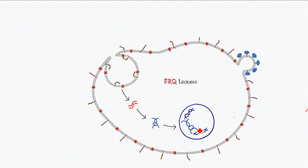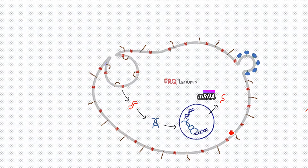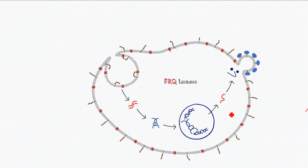Next, normal transcription takes place: the proviral DNA hijacks our cellular machinery and starts producing two kinds of RNA. The first is genomic RNA, which eventually becomes part of the viral body or the daughter HIV. The other is messenger RNA (mRNA), which undergoes translation to produce proteins. However, these are polyproteins and must be cleaved with the help of proteases.